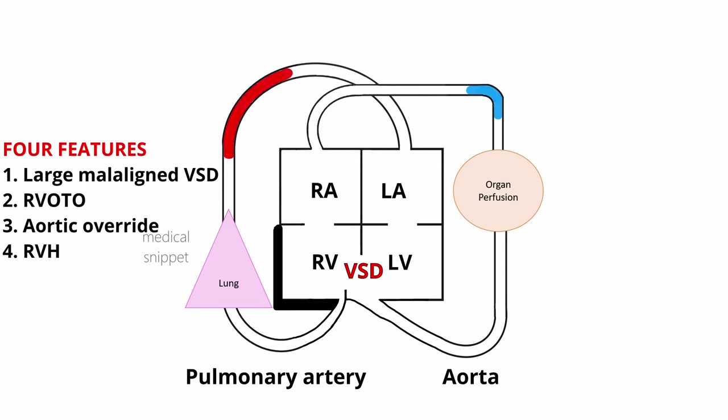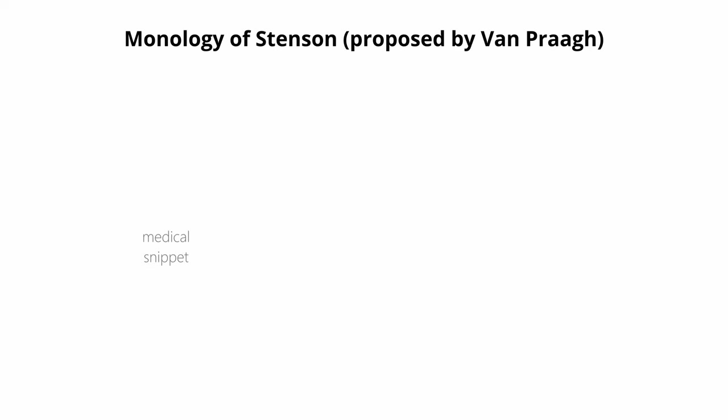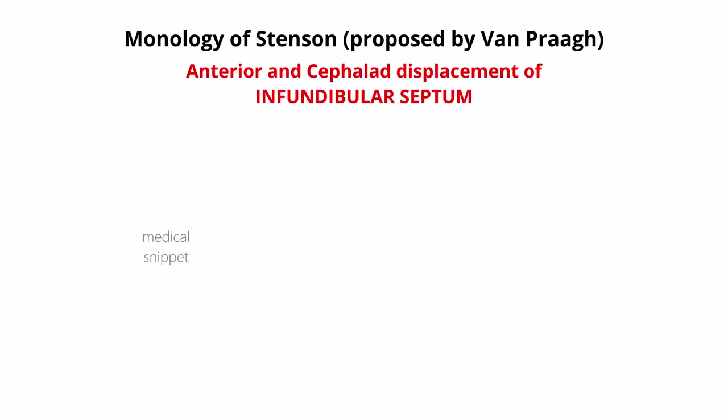The margins of the VSD are in different planes. All four features can be attributed to a single embryological abnormality as proposed by Monpra, called the monology of Stenson. The single abnormality is the anterior and cephalad displacement of the infundibular septum. To understand this, one has to remember the development of the interventricular septum.